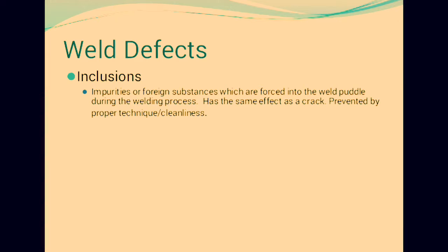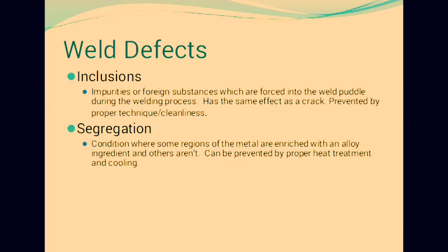Inclusion is prevented by proper technique and cleanliness, which is very important. Segregation is a condition where some regions of the metal are enriched with an alloy ingredient and other areas are not. It can be prevented by proper heat treatment and cooling.